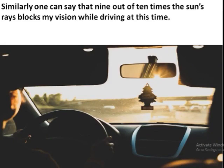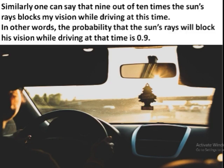For example, somebody might say that 9 out of 10 times the sun's rays block his vision while driving at this particular time. In other words, he can say that the probability that the sun's rays will block his vision while driving at that time is 0.9. That's 9 out of 10.